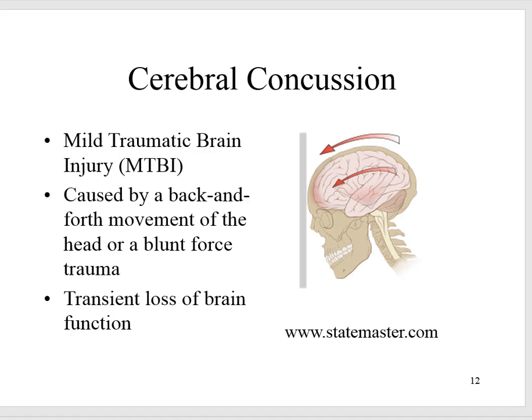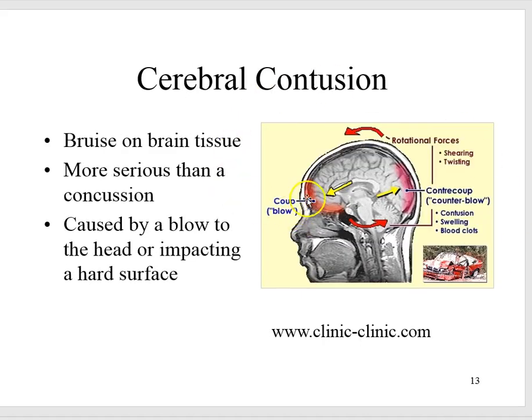You have the coup-contrecoup. The coup is where the head was directly impacted — that's the original impact site. The contrecoup is the area where the brain bounced against the skull on the opposite side. When the brain bounces against the skull, there is twisting and/or tearing of blood vessels and other brain matter. The contrecoup injuries usually result in edema. If the bleeding is extensive, the contusion will lead to a hematoma — a collection of blood.